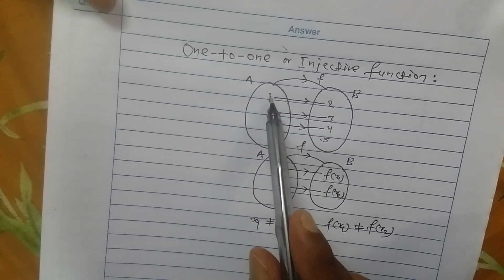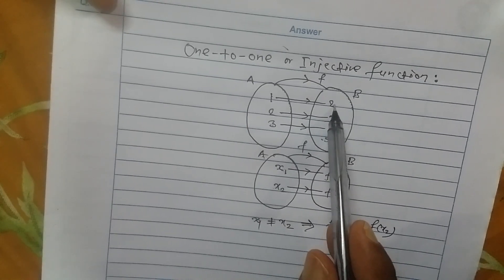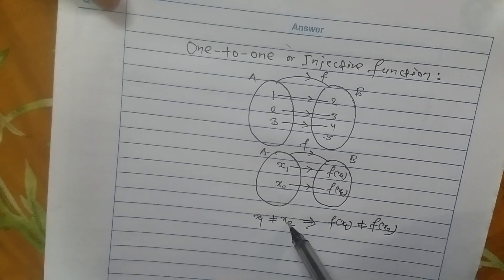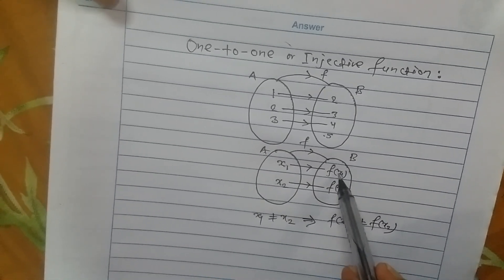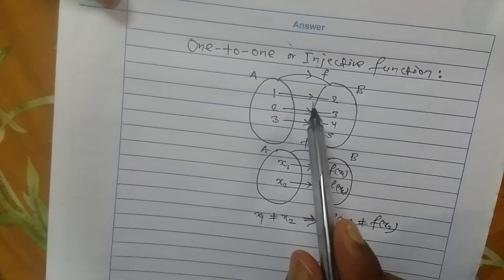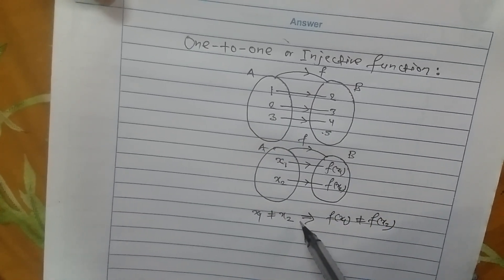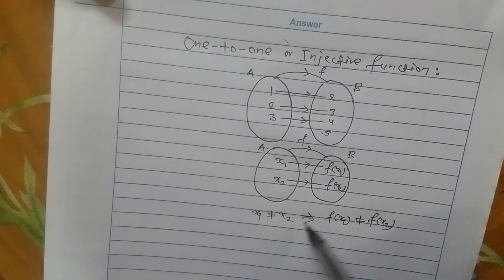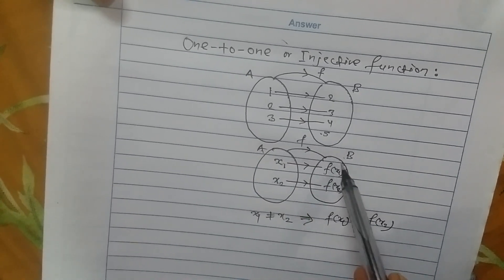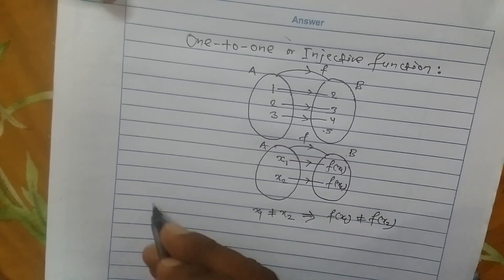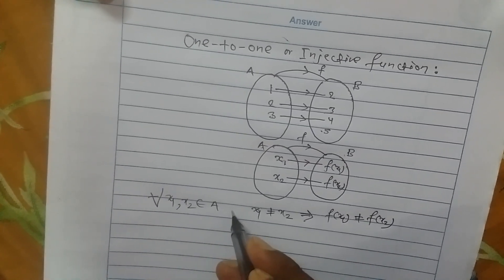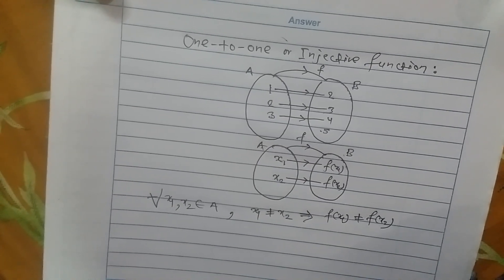The sentence I pronounced was: different elements of the domain have different images in the range. Here, different elements in the domain means x1 is not equal to x2, and different images in the range means f(x1) is not equal to f(x2). So a function f from set A to set B is 1-to-1 if for all x1, x2 in the domain A, x1 ≠ x2 implies f(x1) ≠ f(x2).